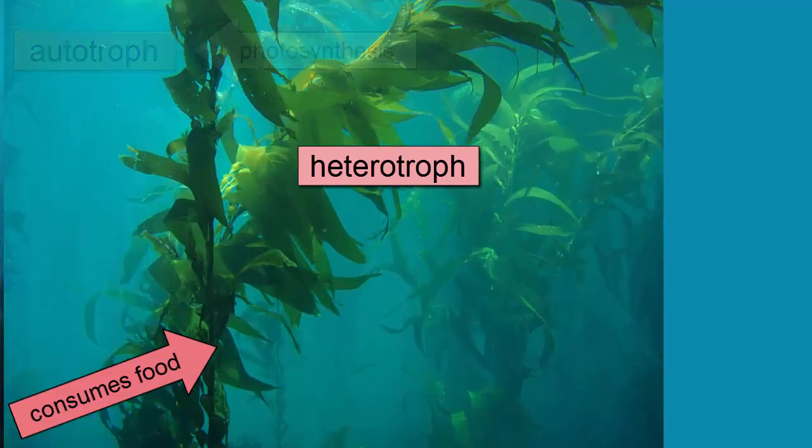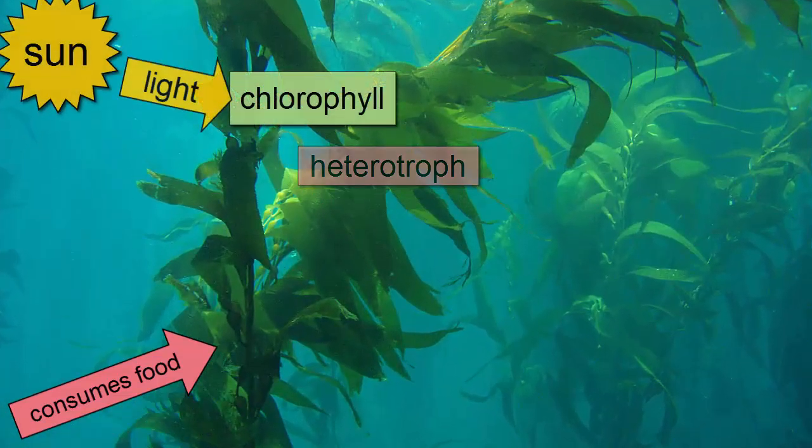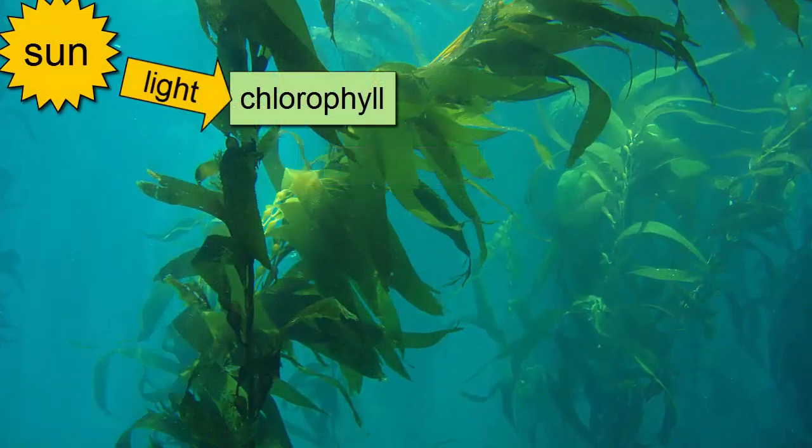Photosynthesis depends on the pigment known as chlorophyll, which absorbs all light energy except green. Chlorophyll reflects green light back to our eyes, which is why chlorophyll-containing autotrophs look green to us.